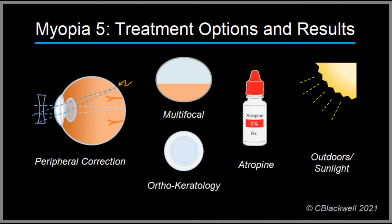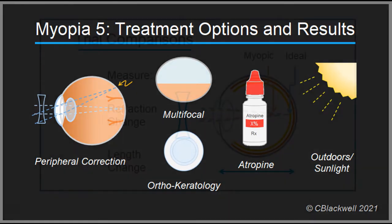These are the leading treatment options for myopia prevention: some form of multifocal glasses, contact lenses, ortho-K lenses, medication — particularly atropine — and increased time outdoors in bright light.